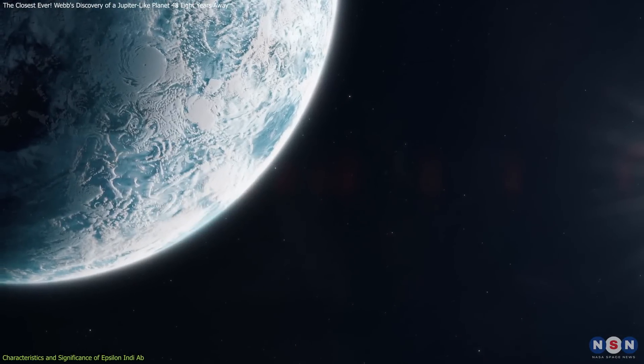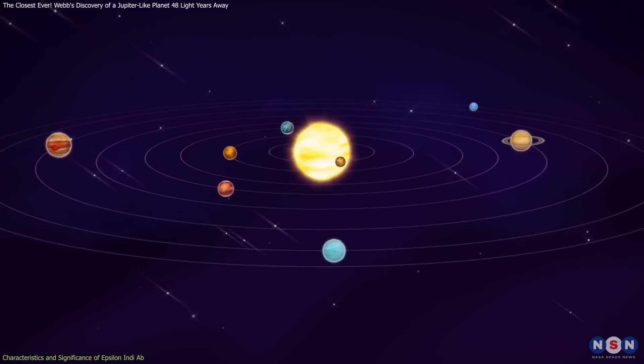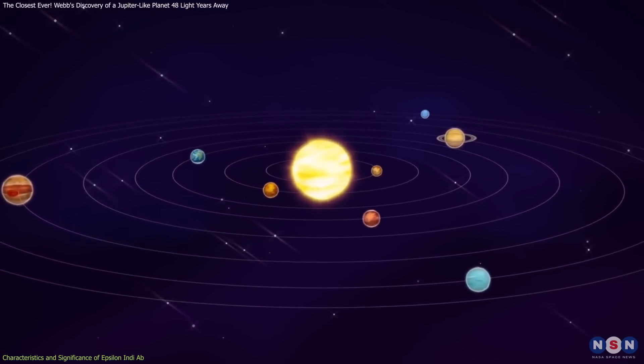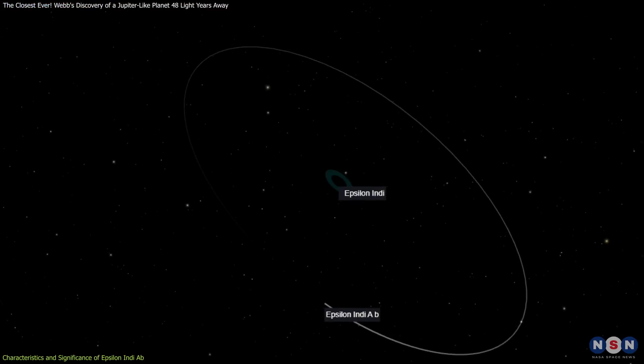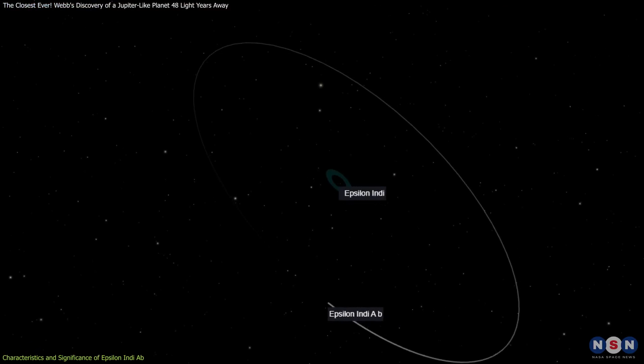place it among the unique class of exoplanets that offer insights into the outer edges of planetary systems. Unlike the gas giants in our solar system, this exoplanet's wide and elliptical orbit suggests a complex history,